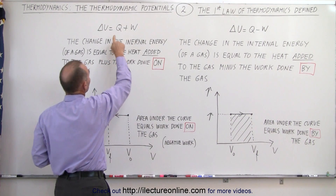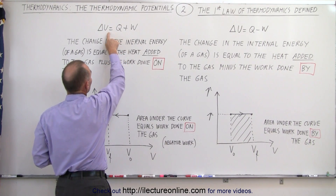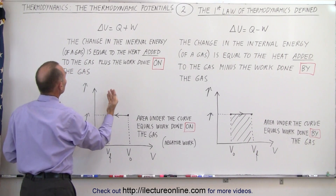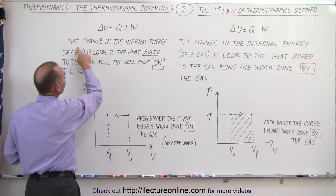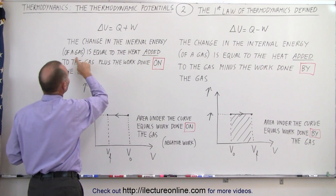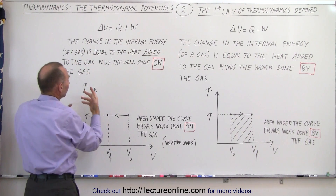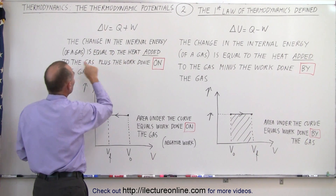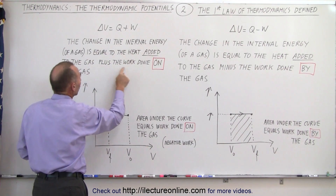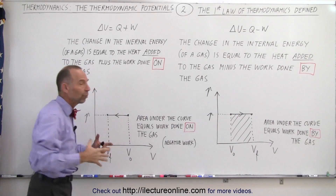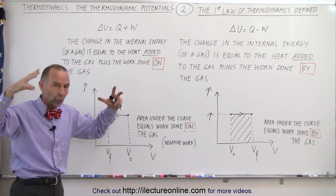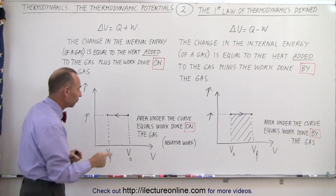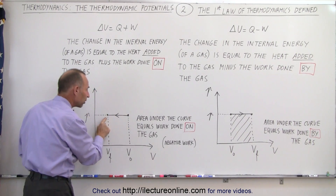But if you write the first law of thermodynamics as delta U equals Q plus W, then the definition reads as follows: the change in internal energy of a gas, or of a system, is equal to the heat added to the gas plus the work done on the gas. So when the atmosphere does work on the gas and compresses the gas, compressing it from a higher volume to a lower volume.